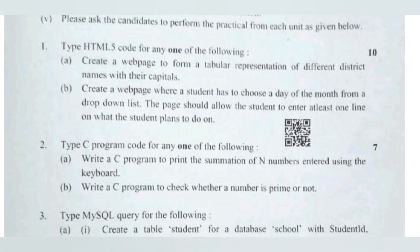Question one: type HTML5 code for any of the following. Both questions are directly from the book. Question A had a small change — instead of mobile, they changed it to district and capitals: create a web page to form a tabular representation of different district names with their capitals. Question B: create a web page where a student can choose the day of the month from a drop-down list, and the page should allow the student to enter at least one line of what the student plans to do. This is directly from the book exercise.